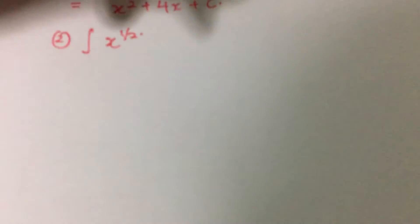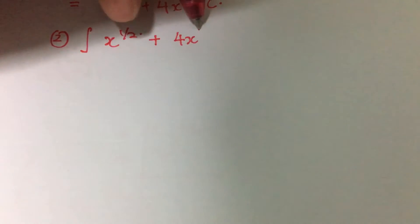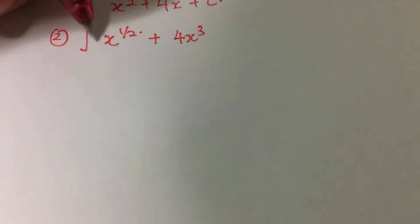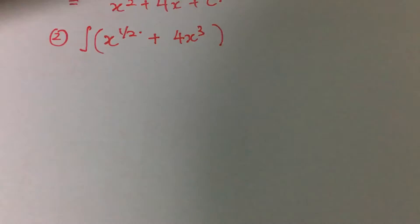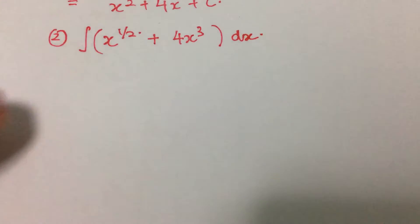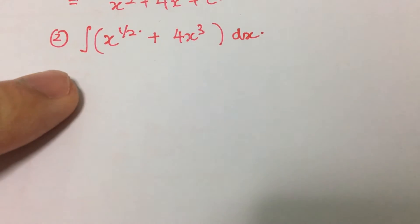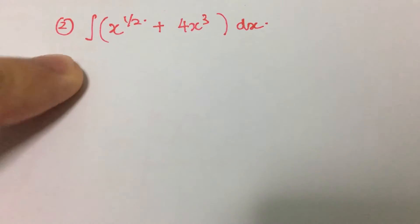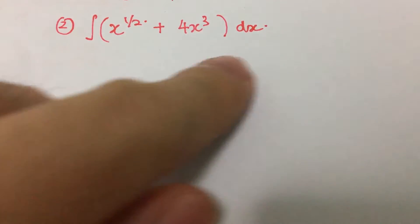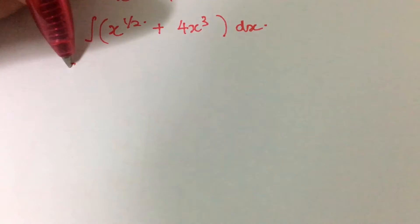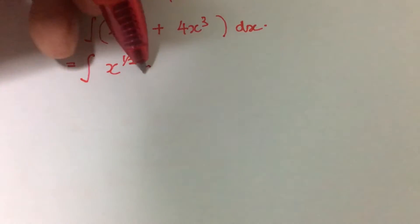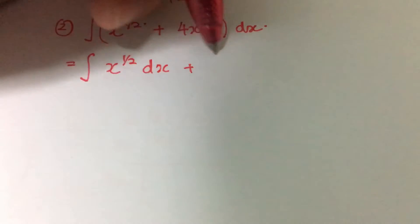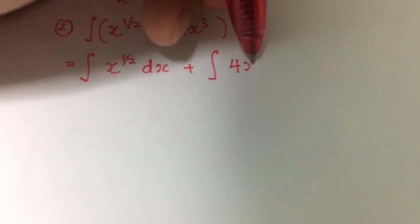This will involve integration of x to the power of half plus 4x cubed dx. How do we go about solving this question? It's the same thing, we split this whole bracket out into two different terms. That will be equal to integration of x to the power of half dx plus the integration of 4x cubed dx.